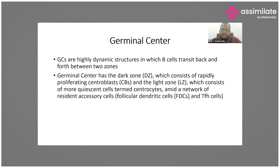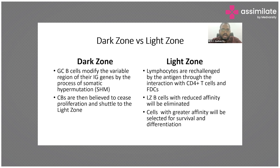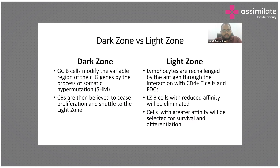The germinal center, present within lymph nodes, has two zones: a dark zone and a light zone. In the dark zone, B cells modify the variable region of their IgG through somatic hypermutation — the cells here are called centroblasts. In the light zone, these modified B cells get exposed to antigens presented by CD4 cells and follicular dendritic cells, and get further refined — these cells are called centrocytes.